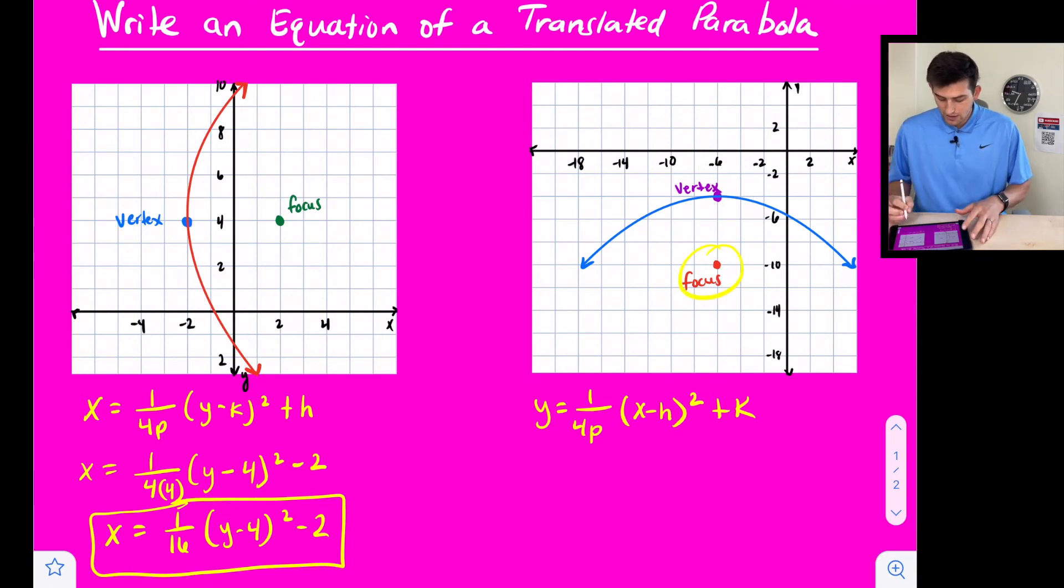We see our focus here, and we can use that to find our P value. We have 1 over 4 times, and notice our focus is lower than our vertex, so it's down. Each of these is 2 units: 2, 4, and 6. So that's a negative 6 for our P value.